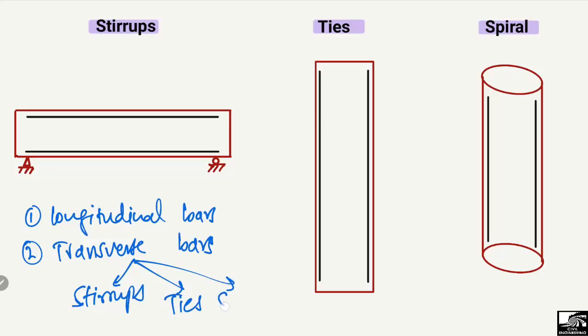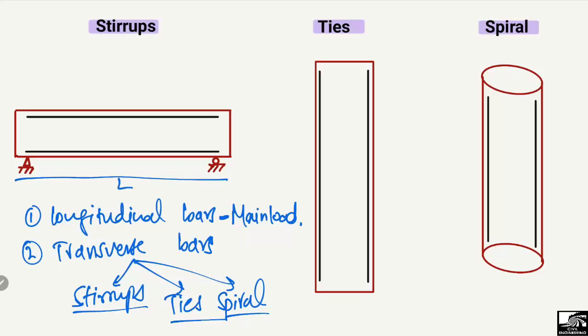The longitudinal bars are mostly used to take the main load coming on the structure. For example, consider a beam of any length L with some load acting on it. Due to this load there is some bending moment, and we provide the main bars — shown here as black lines — which are known as the longitudinal reinforcement. These take the bending stresses created in the beam.